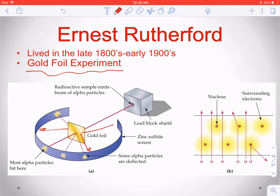Rutherford famously said this was as if you shot a cannonball at a piece of tissue paper and the cannonball bounced back at you — which would be shocking and no good for the cannon operator. The people doing this experiment were shocked, asking: why are these alpha particles bouncing off this really, really thin piece of gold foil?